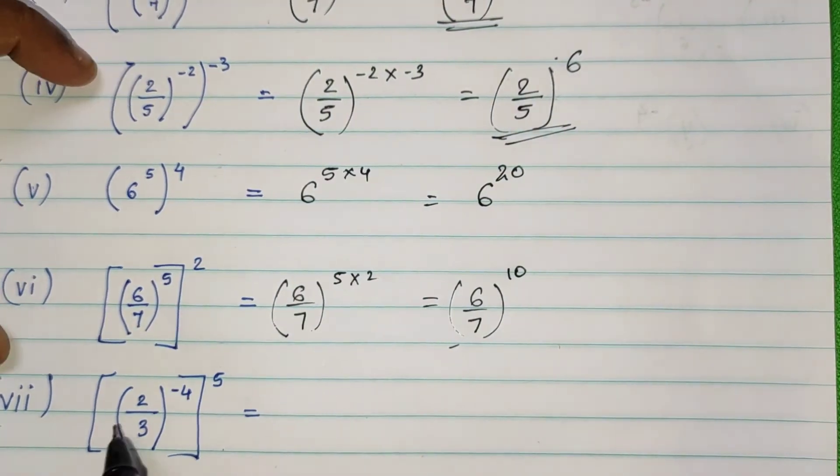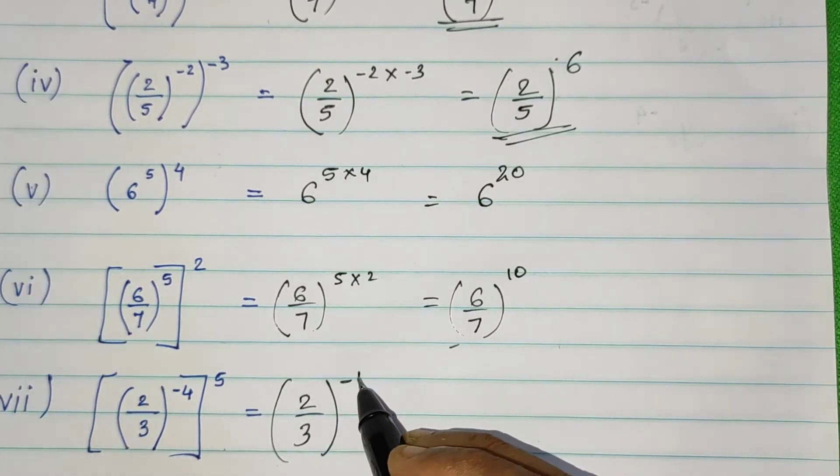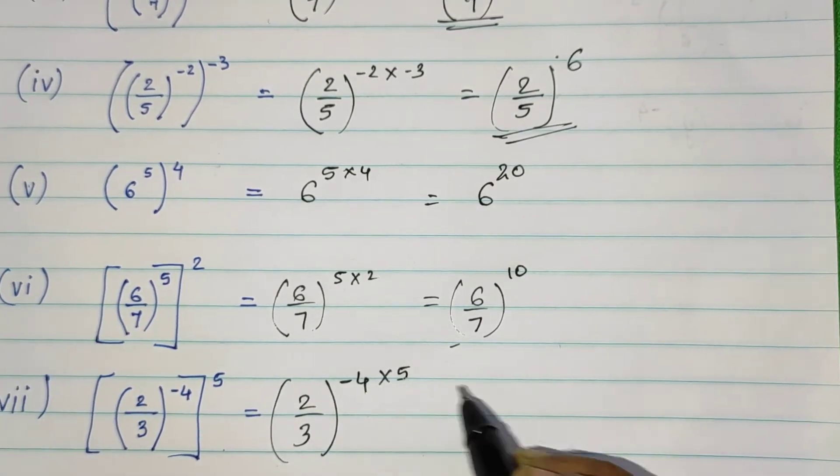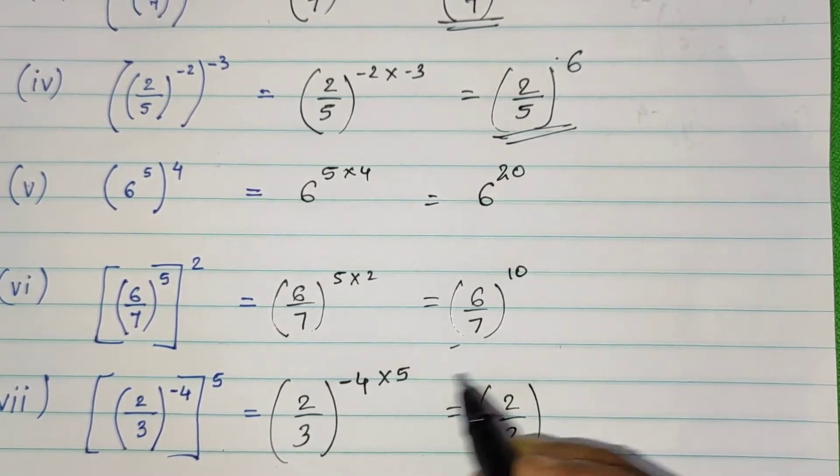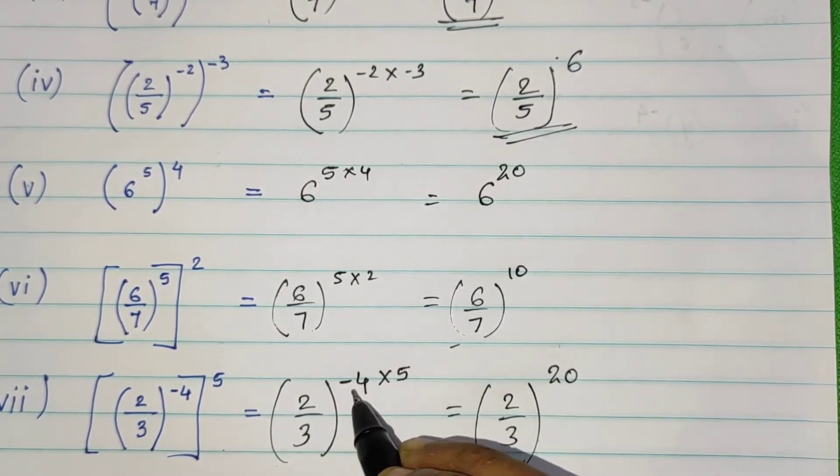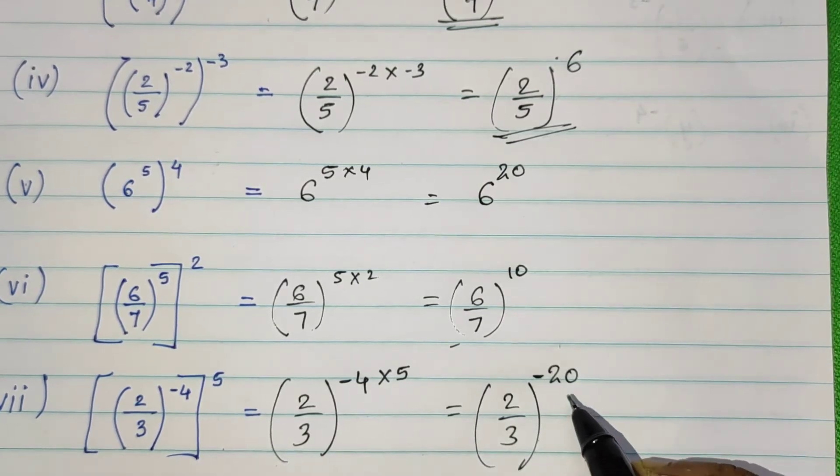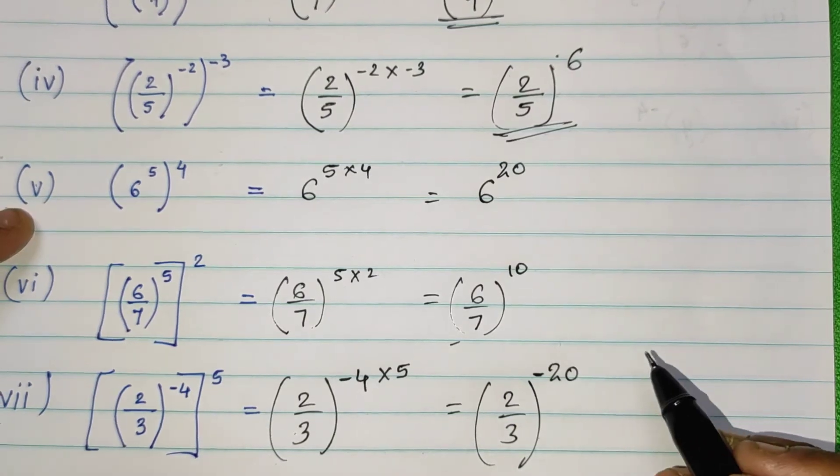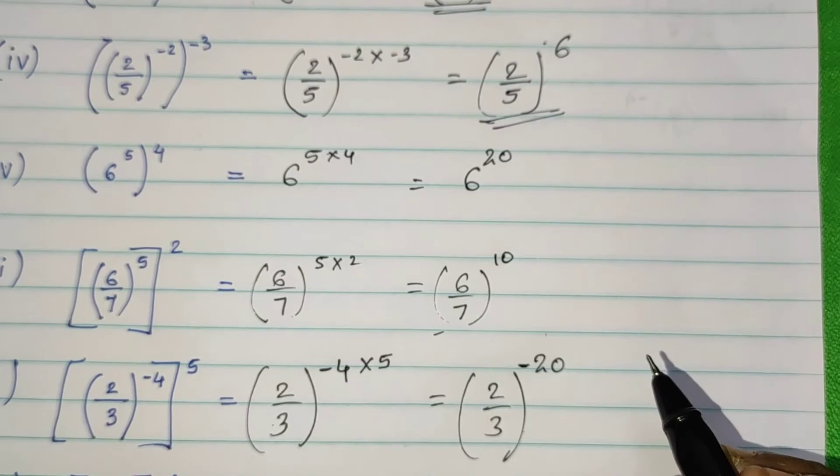Then, further. 2 upon 3 raised to minus 4 into 5. So 2 upon 3 raised to 4 times 5 is 20, and here it is minus 20.